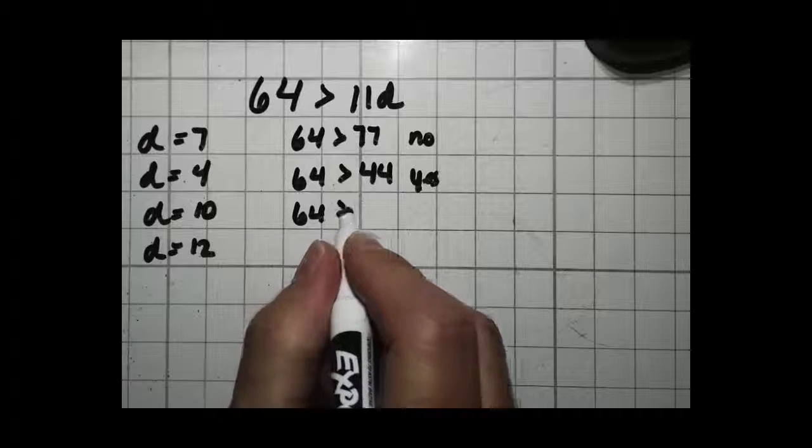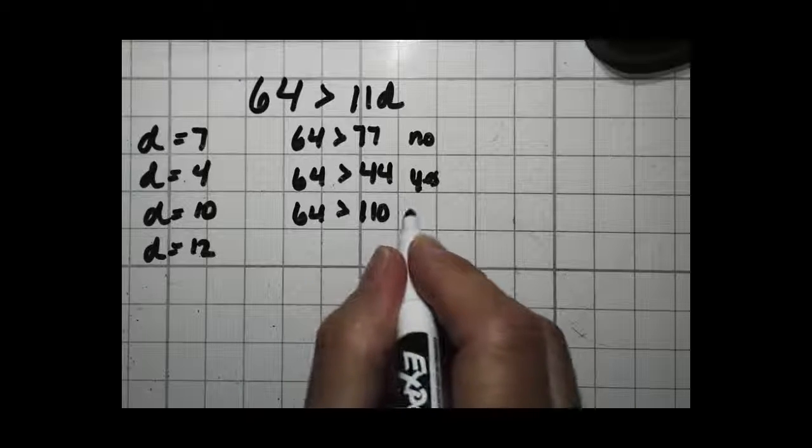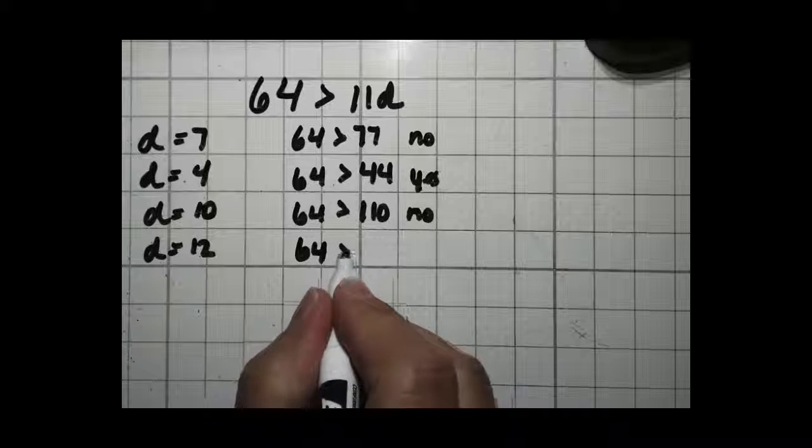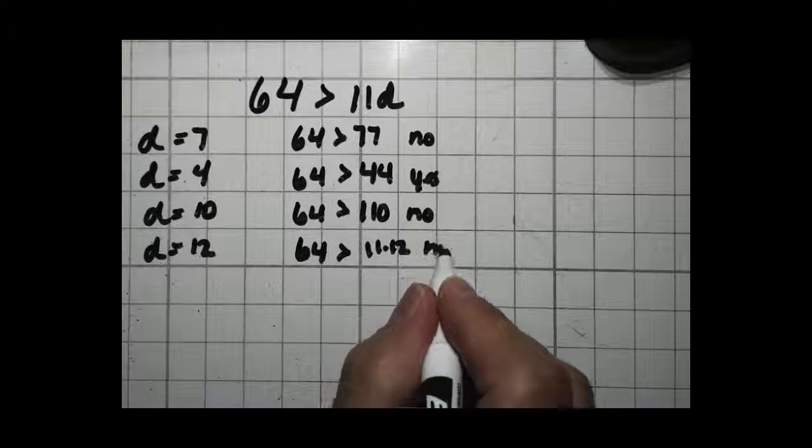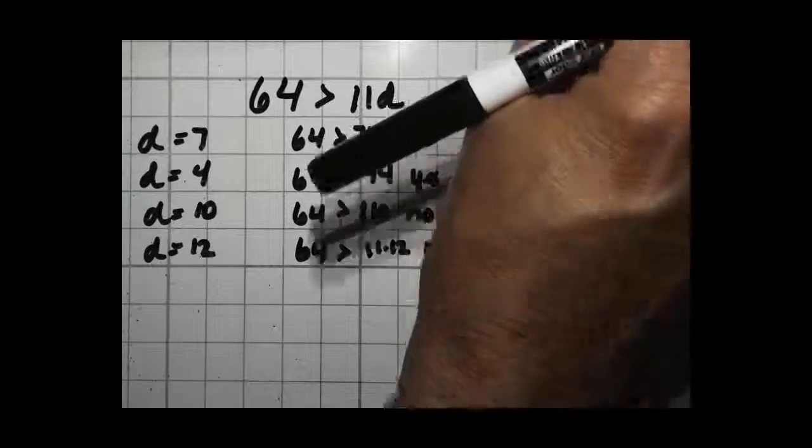64 greater than 11 times 10, which is 110? No. And 64, is that greater than 11 times 12? No. So you see, the only one in this case that was true was d equals 4.